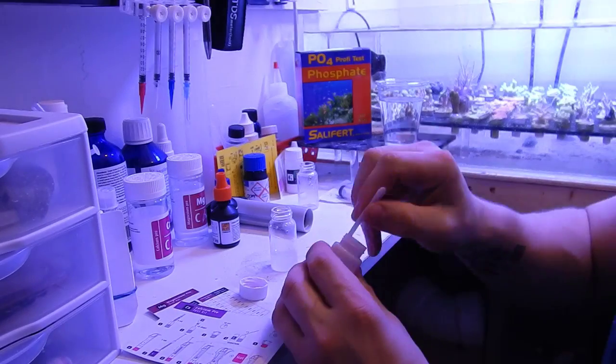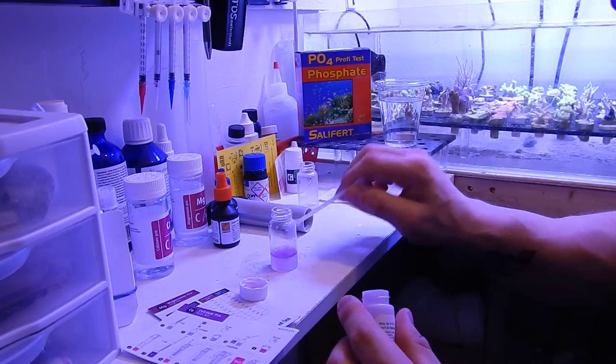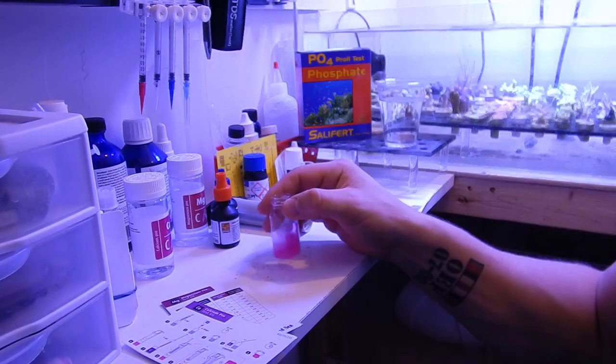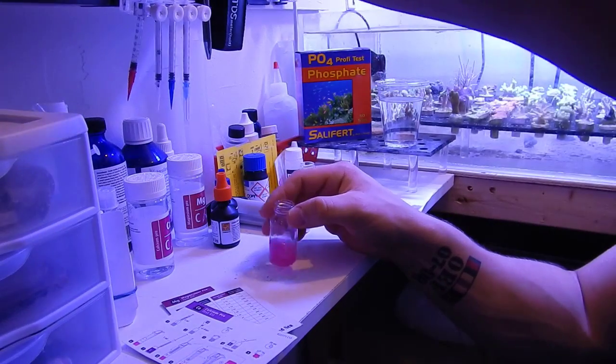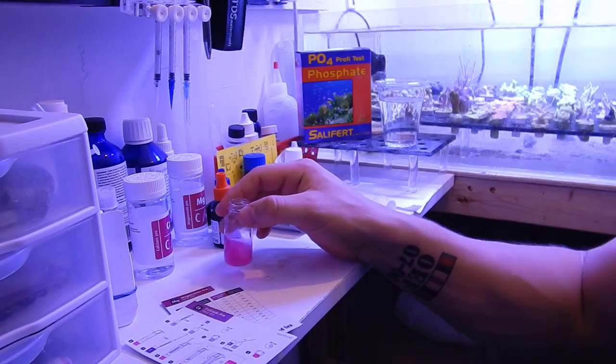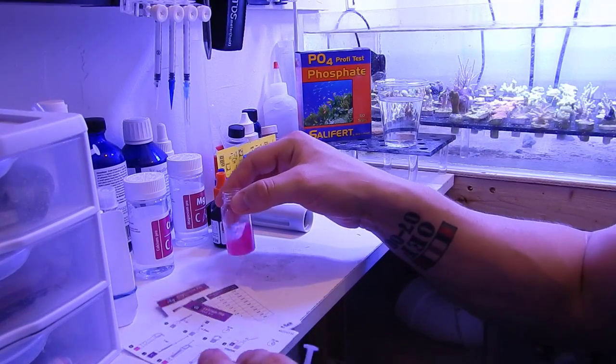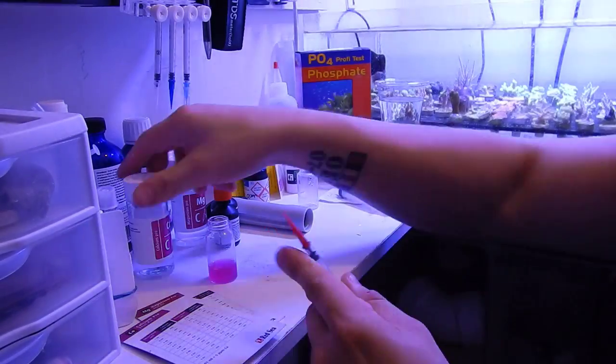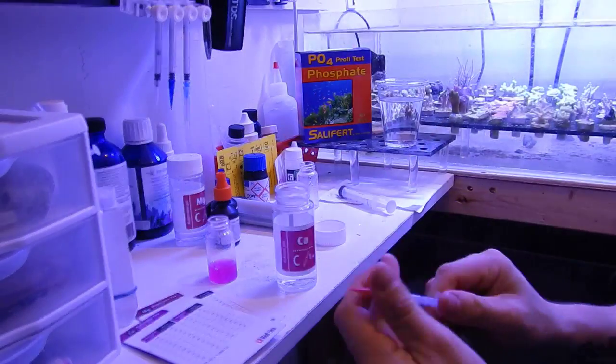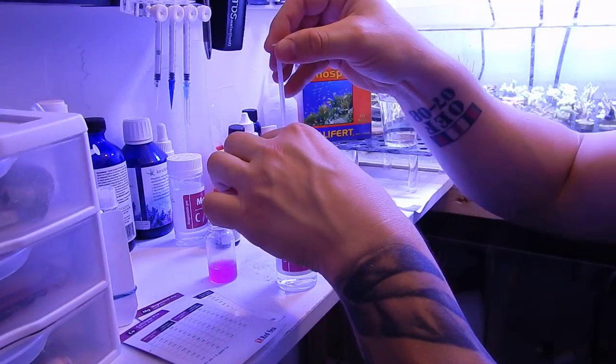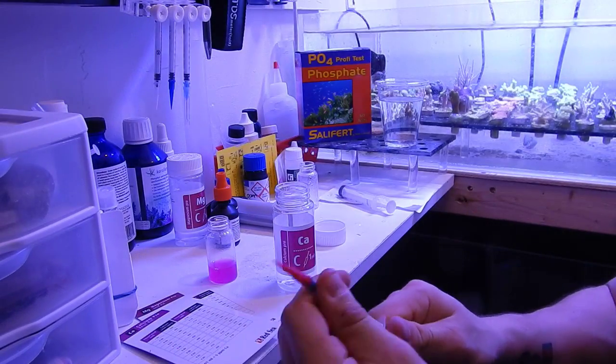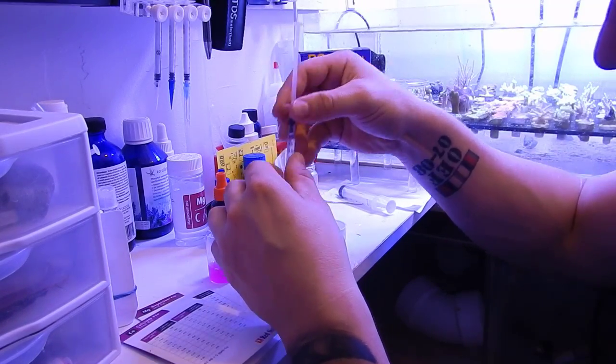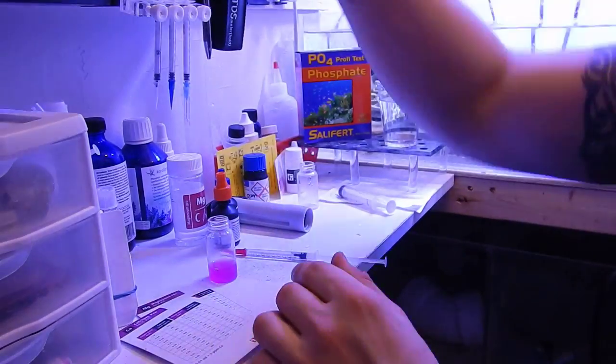When it comes to nitrates and phosphates, I personally like to use the Salifert test kit. I find that it's an easy process, doesn't take as long as the Red Sea, and I still get an accurate reading. Moving on to calcium and magnesium, I personally like to use the Red Sea. I've never tried anything else to be honest with you. I did it the first time a long time ago with calcium and magnesium, fell in love with it, and I haven't changed since then.